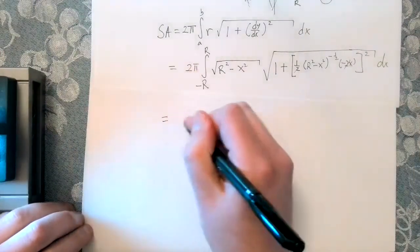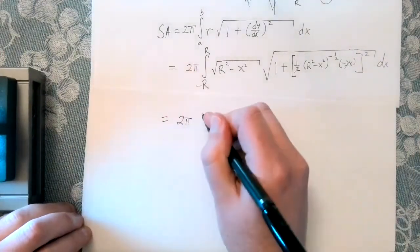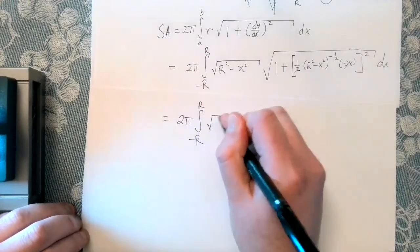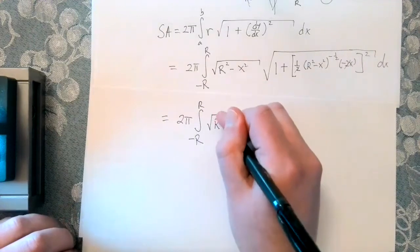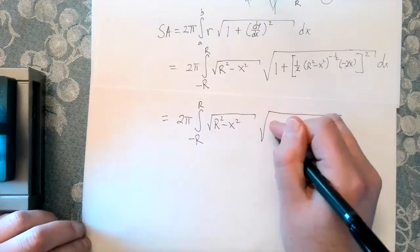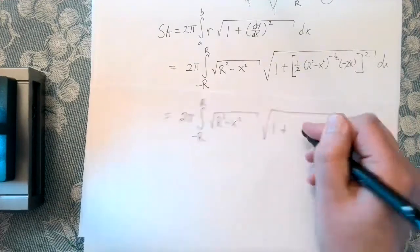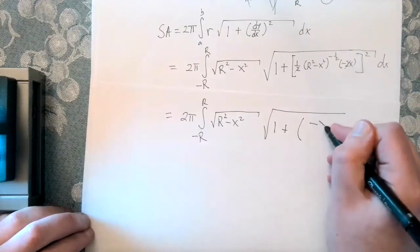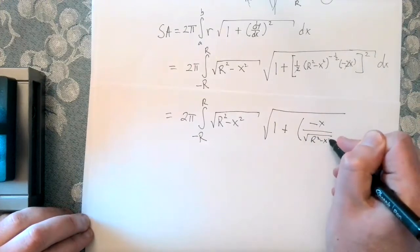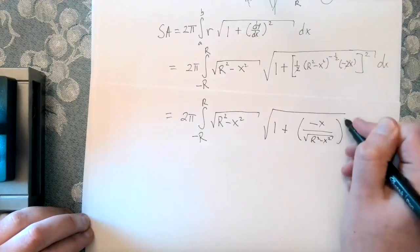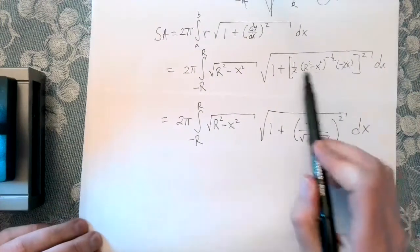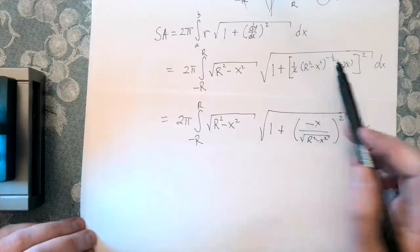So that seems pretty promising so far. Let's see what we have. So we've got our 2 pi. We've got the integral from minus r to r. We still have this radical right here, which is just fine. And then here I've got 1 plus. Let's see here. So I still have minus x over the square root of big r squared minus x squared. So that's all squared. So we just rewrote this algebraically.